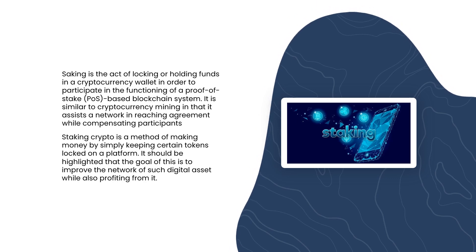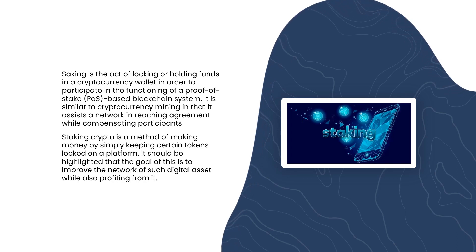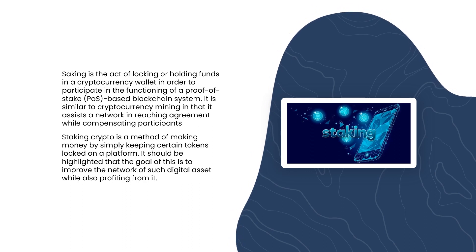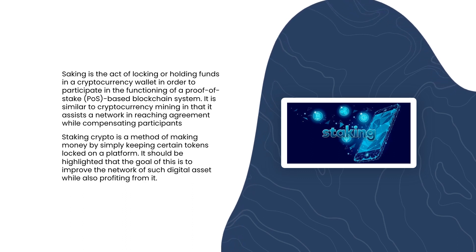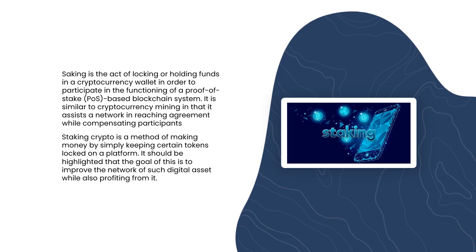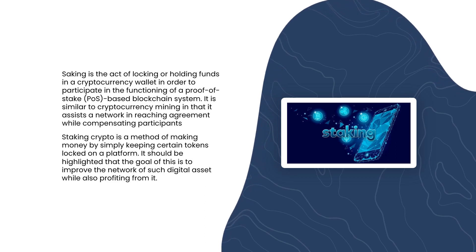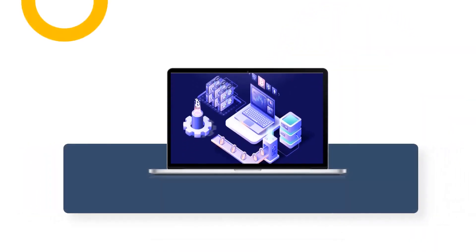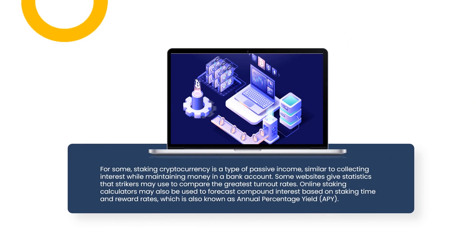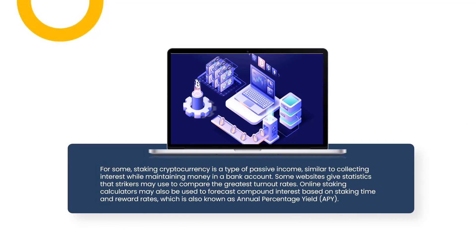Staking crypto is a method of making money by simply keeping certain tokens locked on a platform. The goal is to improve the network of such a digital asset while also profiting from it. For some, staking cryptocurrency is a type of passive income similar to collecting interest while maintaining money in a bank account.